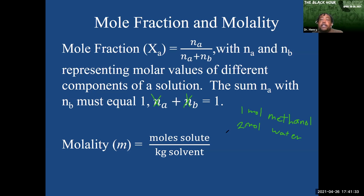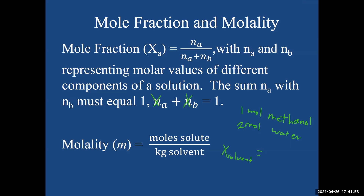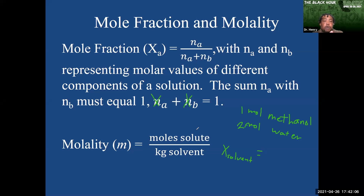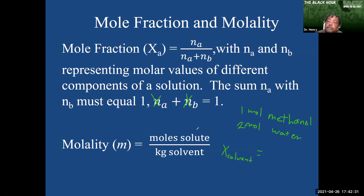Okay, so if we were calculating the mole fraction for the solvent — we want X solvent — we're calculating the mole fraction for the solvent. What would that be in this case? So if we're looking at the part over the whole, the whole solution is the combination of the number of moles of methanol and water over that part. So the solvent was water. Don't we have the number of moles of water? Yes — two.